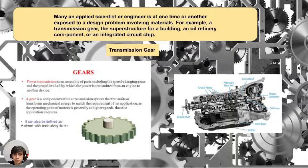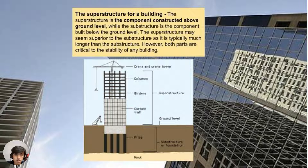Here we can see the different things we make from our materials. Many scientists and engineers are exposed to design problems involving materials. For example, a transmission gear is made up of metals, developed for our vehicles to move. Next is the superstructure for a building — the superstructure is the component constructed above ground level, while the substructure is the component built below ground level.